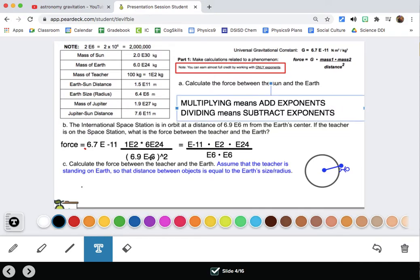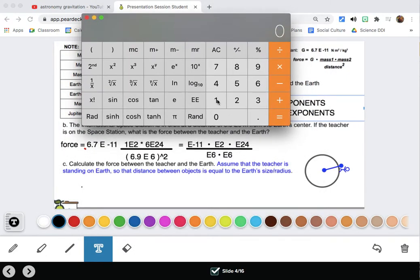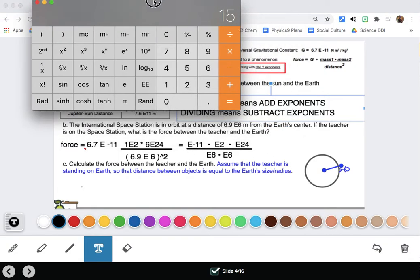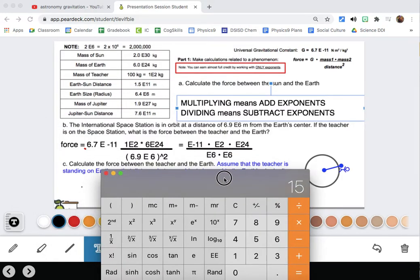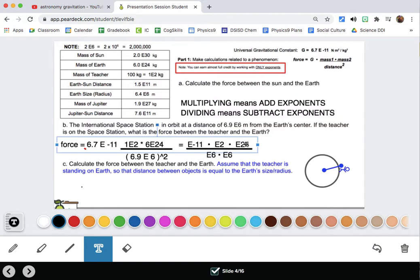Let's see what this means. E to the negative 11 times e2 times e24. I'm going to add these numbers together. Negative 11 plus 2 plus 24. It's multiplying actually because they're exponents, but that's how I'm dealing with my exponents as I'm adding them to figure out the answer. Then I need to subtract these two because they're being divided. So minus 6 minus 6 equals e3.